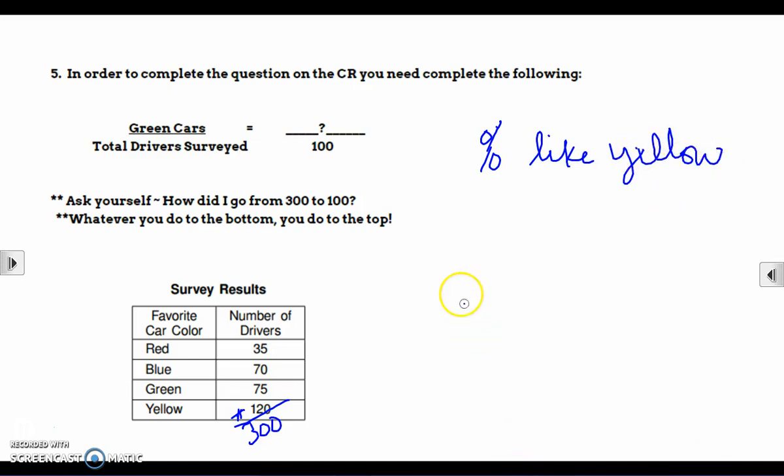So what we're going to do is part over total is percent out of 100. So we're going to do the number of drivers who like yellow out of the entire group surveyed, total number of drivers surveyed is 300, is what percent out of 100? Well, if I look at my chart, the number who like yellow cars is 120. So that means 120 out of 300 drivers surveyed like yellow cars.